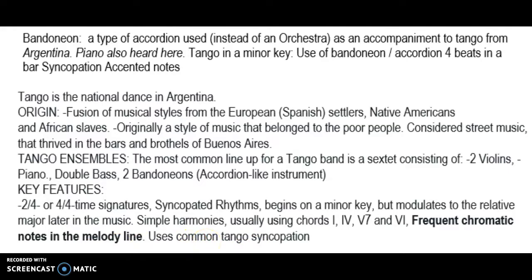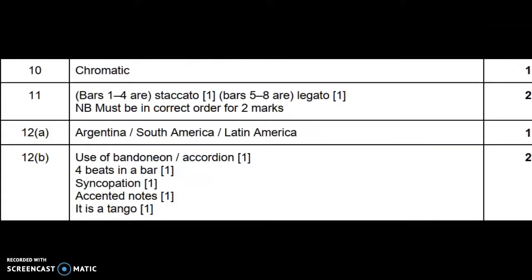So let's listen to this music again and look at the mark sheet. I hear the bandoneon — first it was staccato, now it changes over to legato, and then you hear the chromatic scale. It's from Argentina because it's the tango — you can also say South America or Latin America — and you have the bandoneon there, four beats in a bar, syncopation, accented notes, and it's a tango.